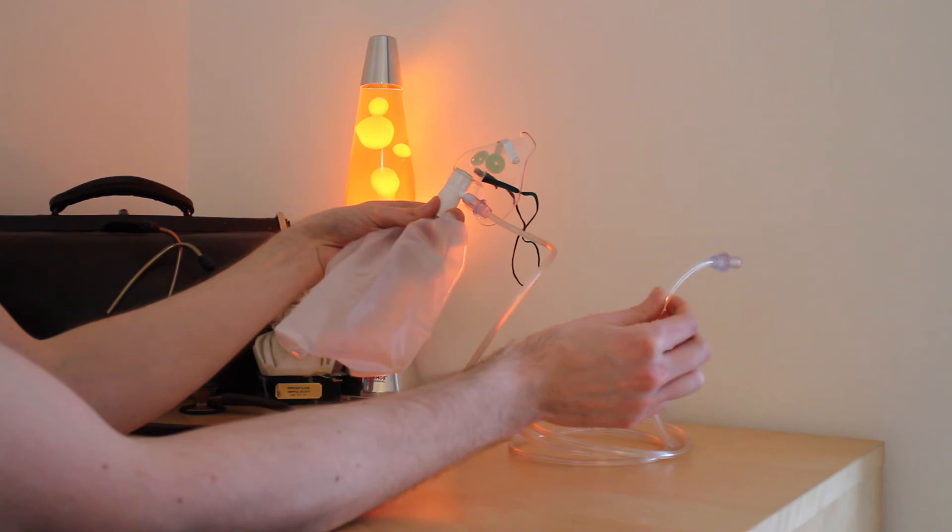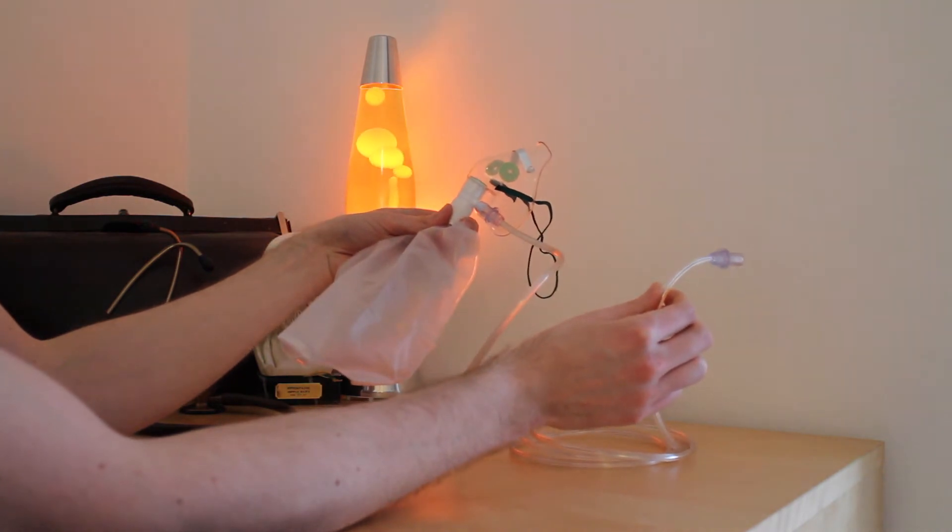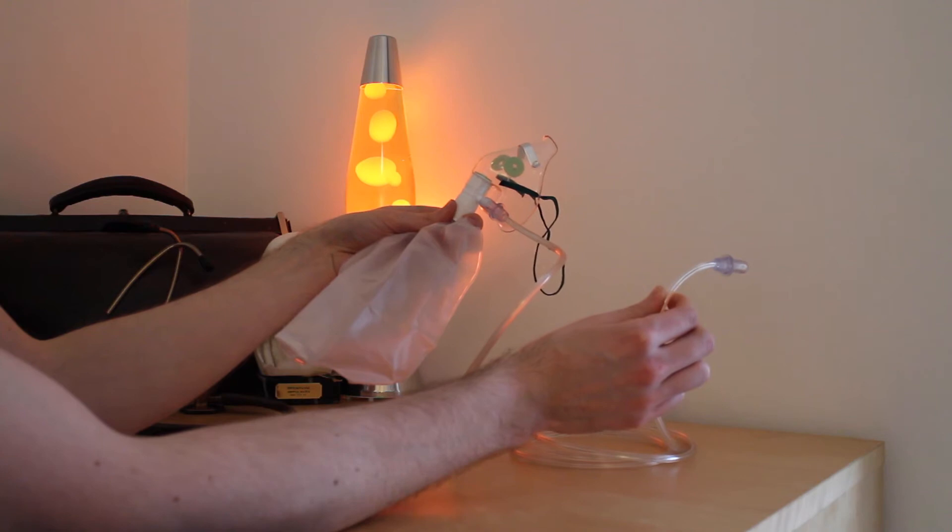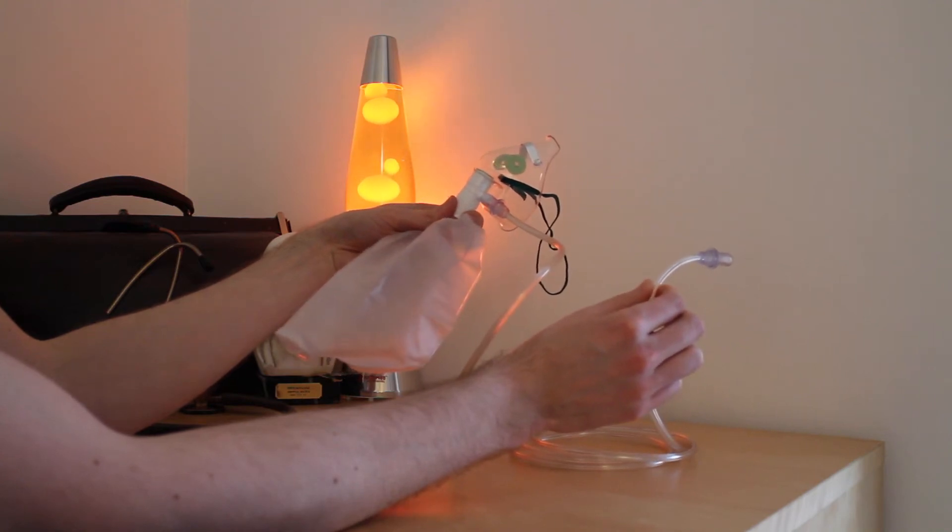The tubing should be connected to the oxygen supply with a flow rate of at least 10 litres a minute but preferably 15 litres a minute.